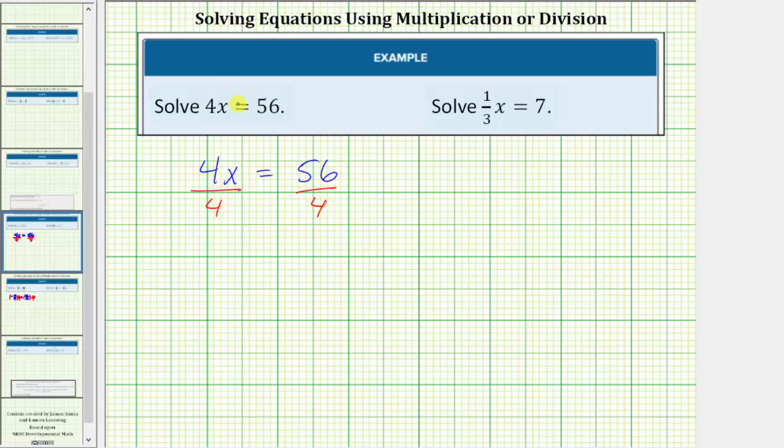Now we simplify both sides. On the left side, 4 divided by 4 simplifies to 1, and 1 times x is x. So the left side simplifies to x. On the right, 56 divided by 4 is equal to 14. So the solution to the equation is x equals 14.